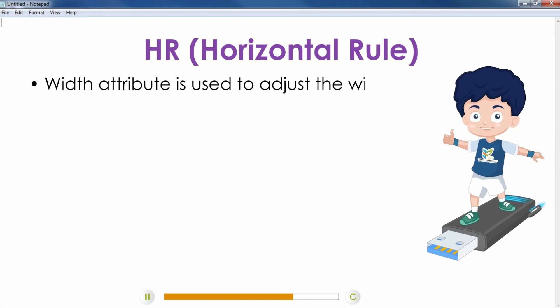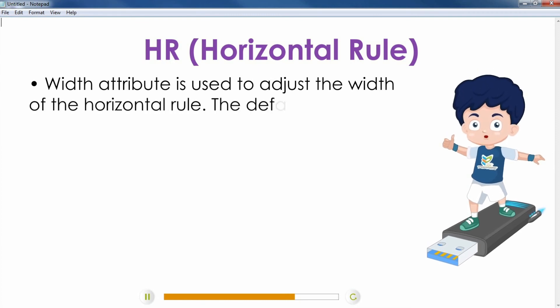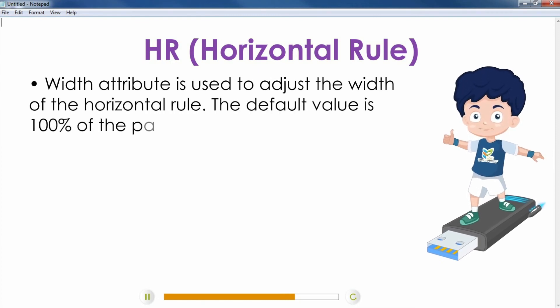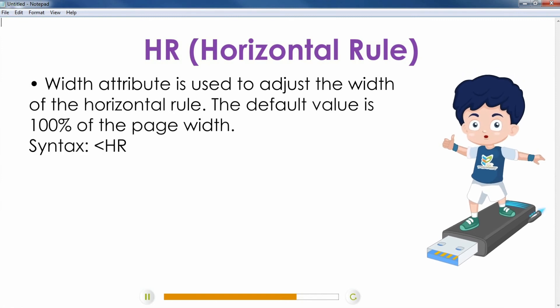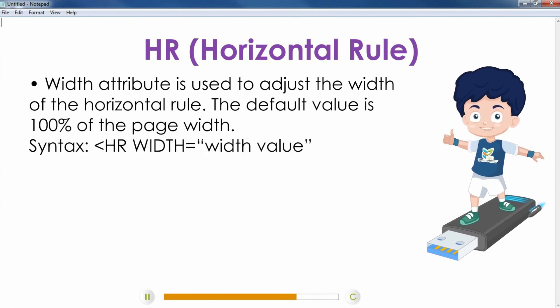Width attribute is used to adjust the width of the horizontal rule. The default value is 100% of the page width. Syntax: Hr width equals width value.